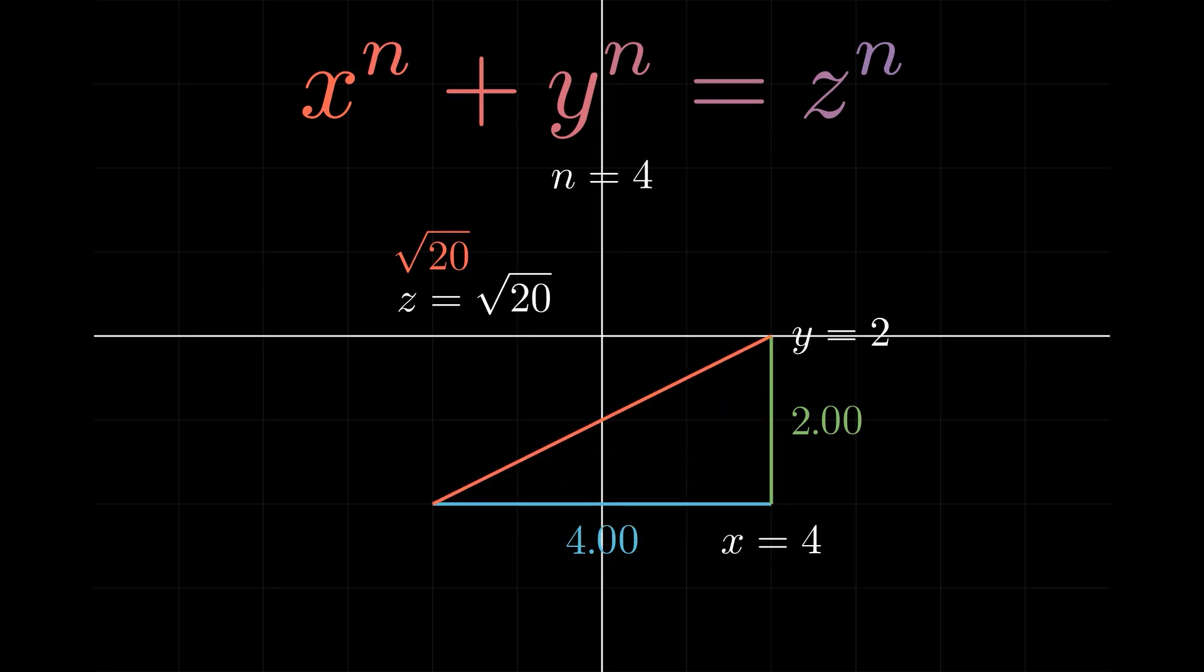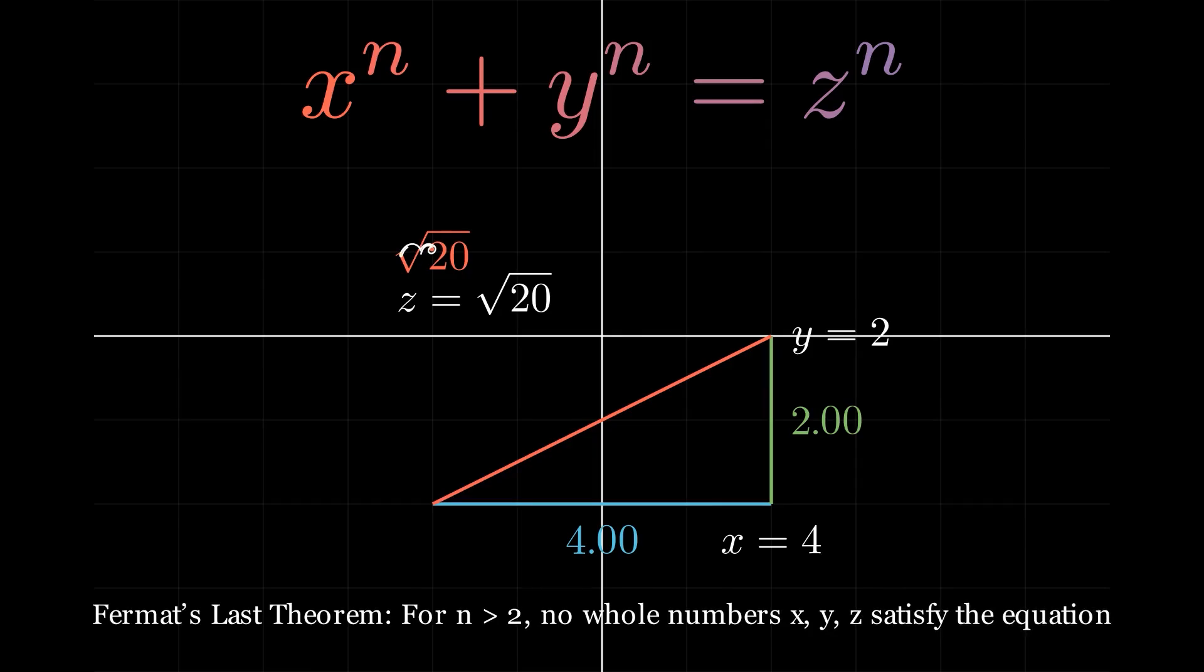Here's a twist. What if we changed the exponent? What if instead of n equals 2, we make n equals 3? Or n equal to 4? Does this equation still work?